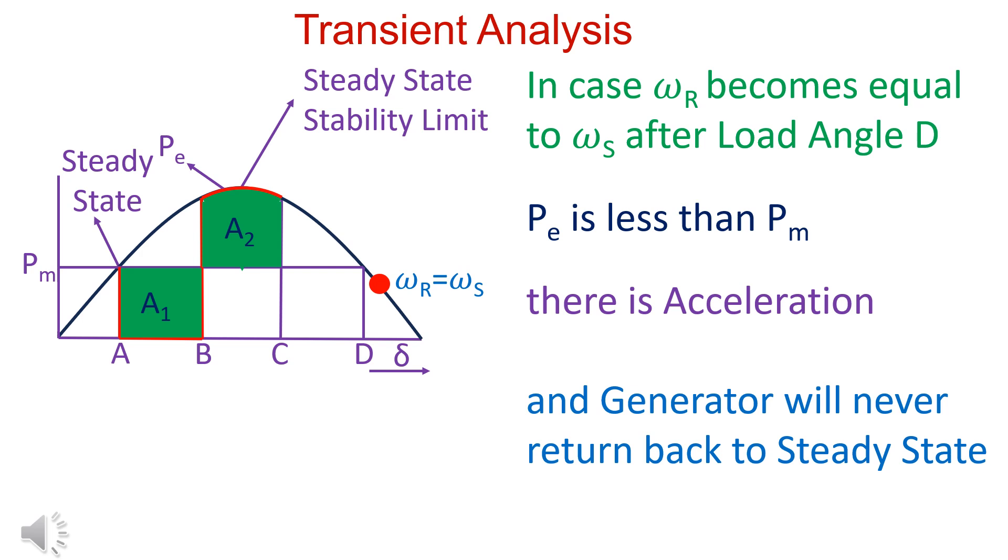In case Omega R becomes equal to Omega S after load angle crosses D, PE is less than PM and there is acceleration. Load angle keeps on increasing and generator does not return back to steady state.